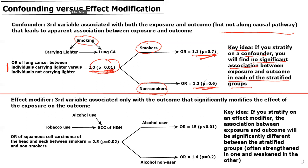Let's compare this to an effect modifier. An effect modifier is a third variable that is associated only with the outcome, and it significantly modifies the effect of the exposure on the outcome.